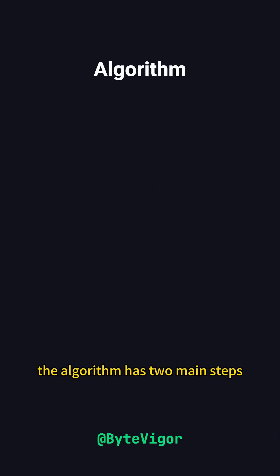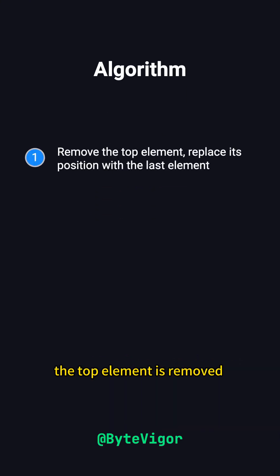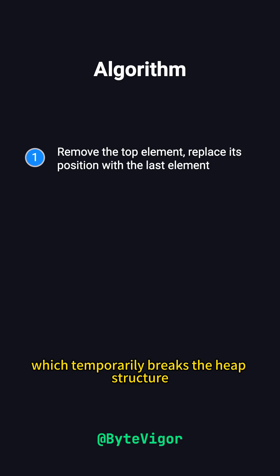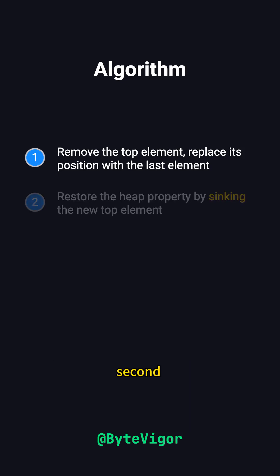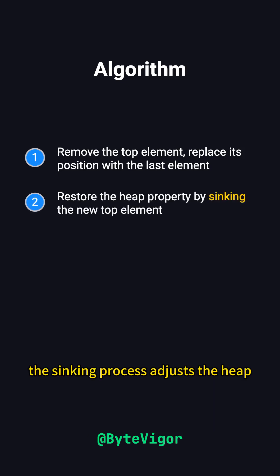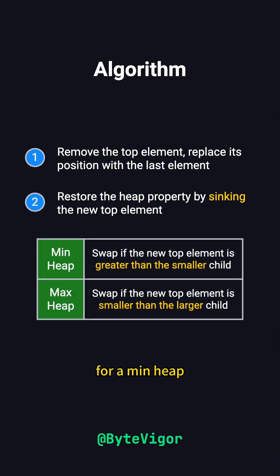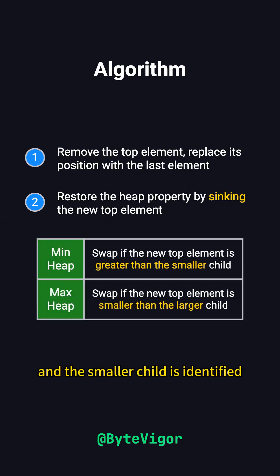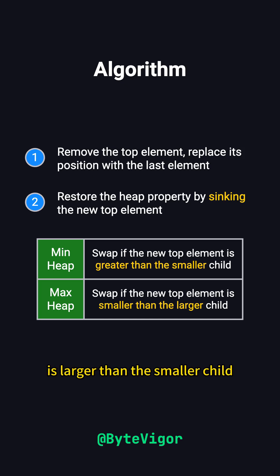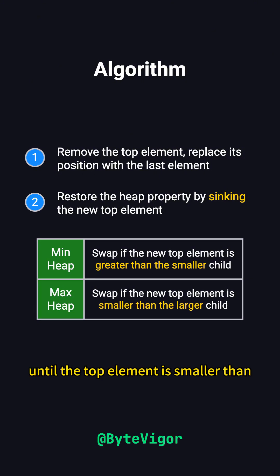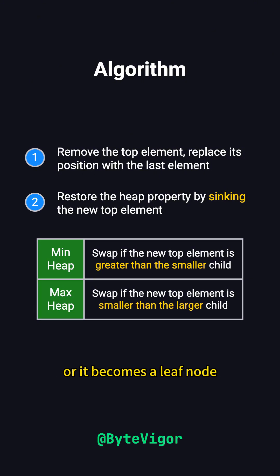The algorithm has two main steps. First, the top element is removed and replaced with the last element in the heap, which temporarily breaks the heap's structure. Second, the sinking process adjusts the heap. For a min-heap, the new top element is compared with its child nodes, and the smaller child is identified. If the top element is larger than the smaller child, they are swapped. This process continues until the top element is smaller than or equal to the smaller child, or it becomes a leaf node.